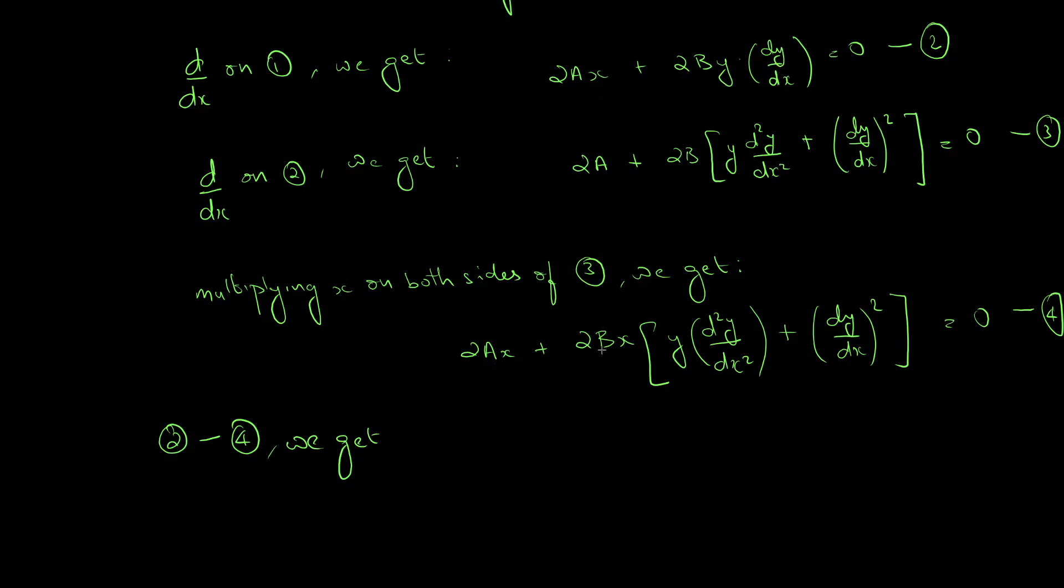2By dy/dx minus 2Bx. So we will take 2Bx into y dy/dx minus xy d²y/dx² minus x into dy/dx the whole square equal to 0.